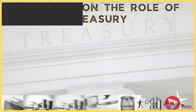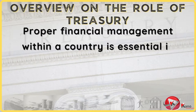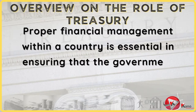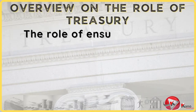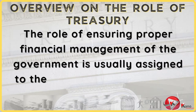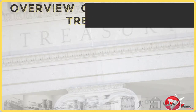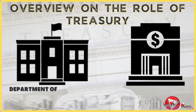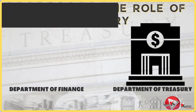As a starting point, it should be mentioned that proper financial management within a country is essential in ensuring that the government fulfills its mandate and its objectives. This role of ensuring proper financial management of the government is usually assigned to the Department of Finance or the Treasury Department. In this video, we will be using the terms Department of Finance and Department of Treasury interchangeably. It should also be mentioned that in some countries, these departments might be separate and perform different roles.